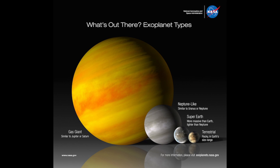Here are the four planet types. You see an image — one is labeled a gas giant, then Neptune-like, then a super-Earth, then terrestrial. Pretty simple.